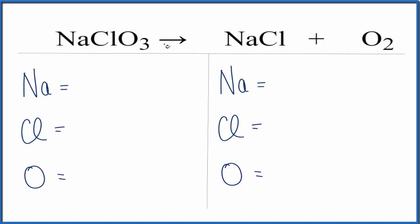So let's add up the atoms on each side of the equation and balance this thing. We have one sodium, chlorine one, oxygen three. Sodium's over on the product side one, chlorine one, oxygen's two.